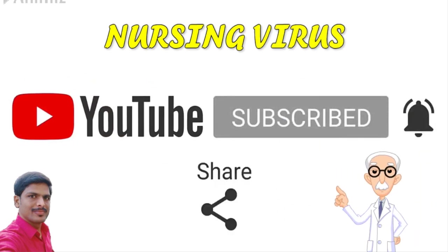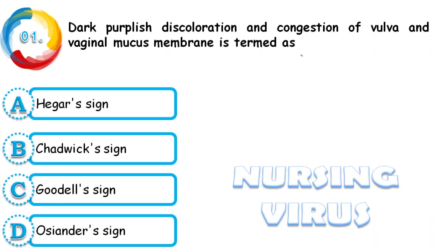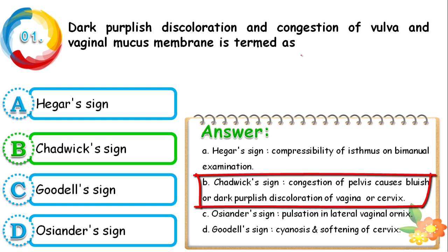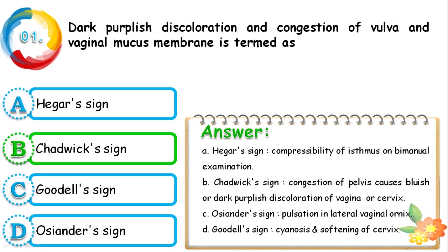Question 1: Dark purplish discoloration and congestion of the vulva and vaginal mucous membrane is termed as — Hegar sign, Chadwick sign, Goodell sign, or Osiander sign? The correct answer is Chadwick sign. When a woman gets congestion of the pelvis, it causes bluish or dark purplish discoloration of the vagina and cervix.